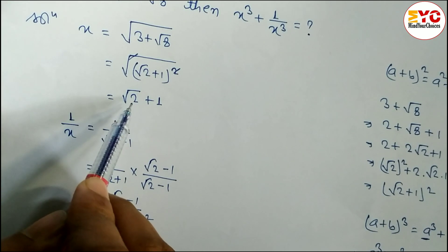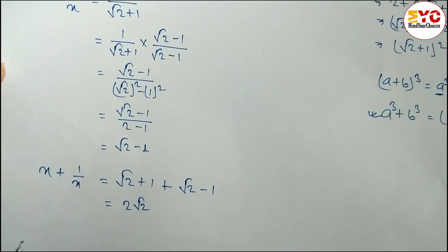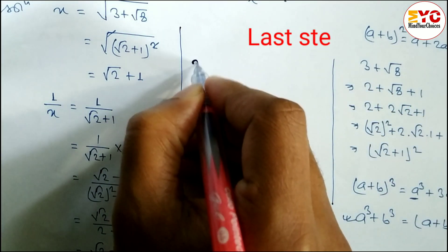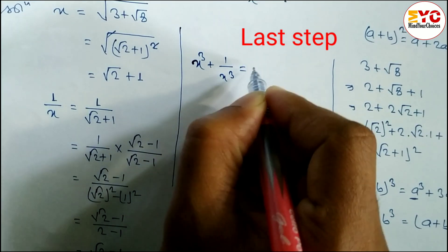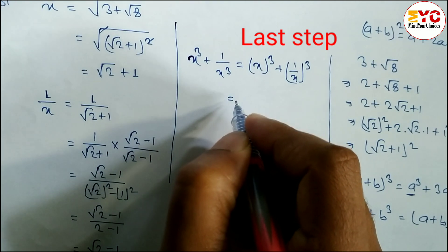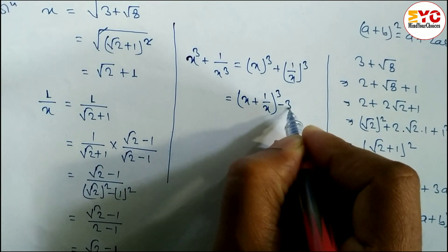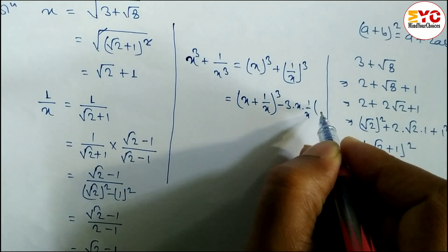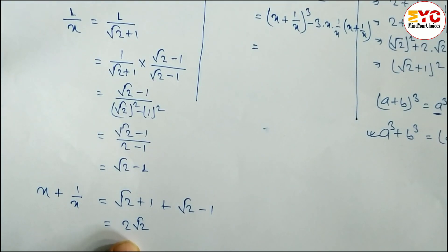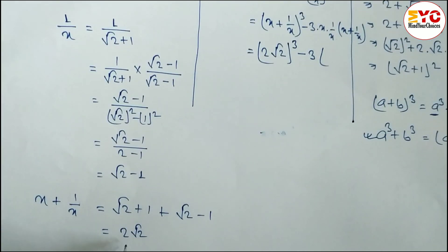To summarize: in step one we found x = √2 + 1, in step two we found 1/x = √2 − 1, and in step three we found x + 1/x = 2√2. Now finally, we find x³ + 1/x³ using the formula a³ + b³ = (a + b)³ − 3ab(a + b). We write: (x + 1/x)³ − 3·(x · 1/x)·(x + 1/x) = (2√2)³ − 3·1·(2√2).